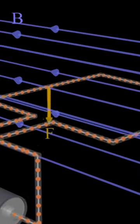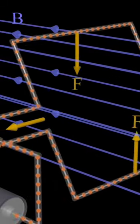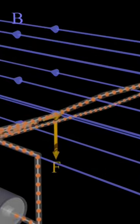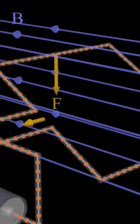The current loop experiences a torque due to the offset forces on the top and bottom sections of the loop. The forces on the front and back segments of the loop exactly cancel, so they do not contribute to the net torque on the loop.